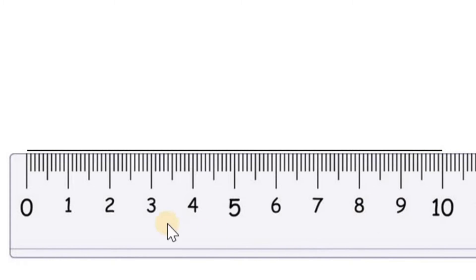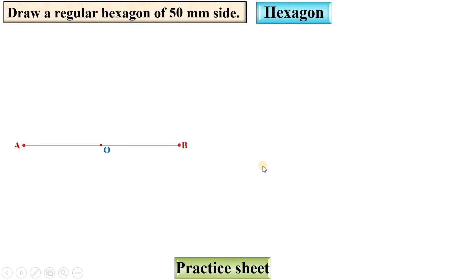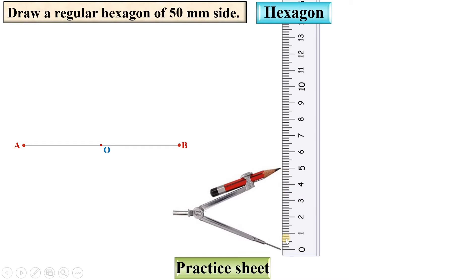Give the name at the end of this line as A and B. Mark the midpoint of this line AB, give the name as O. Now take the compass and set the radius of the compass as 50 mm. Draw the circle with O as the center.